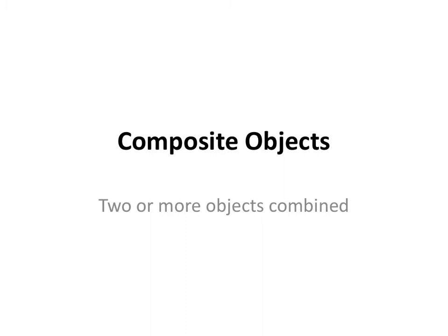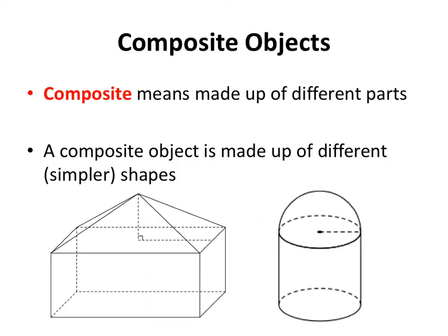In this video lesson, we're going to look at finding the surface area and volume for composite objects. Composite is a word that means made up of different parts. So a composite object is made up of different simpler shapes.